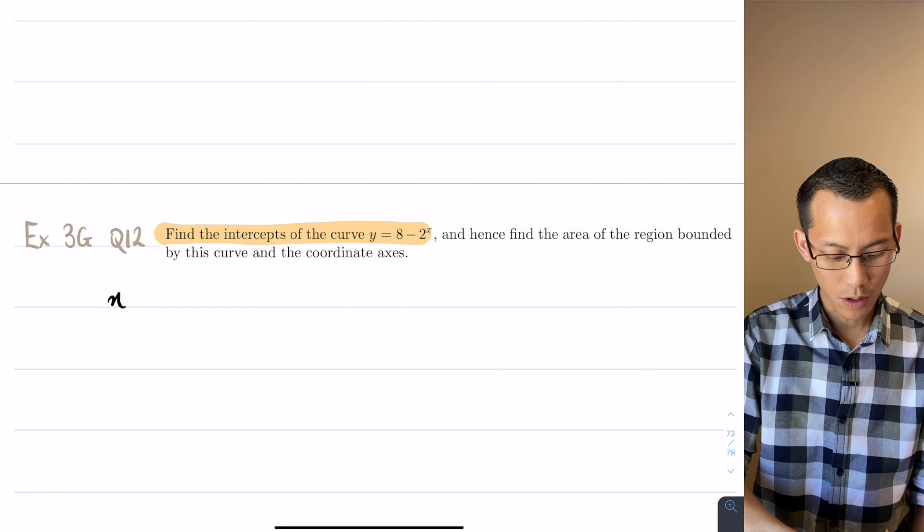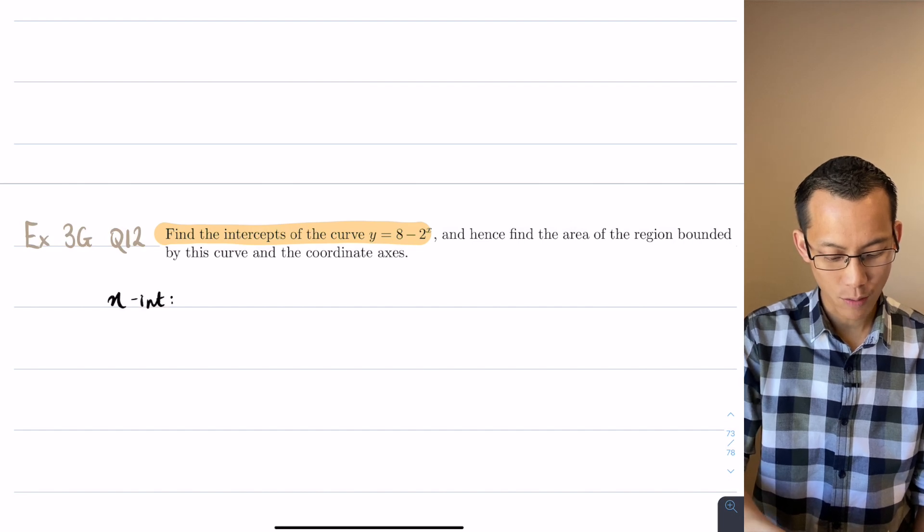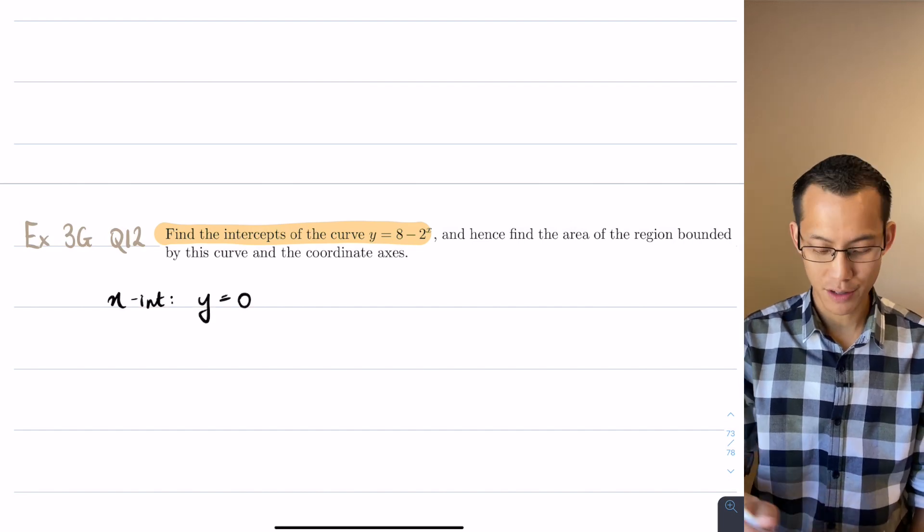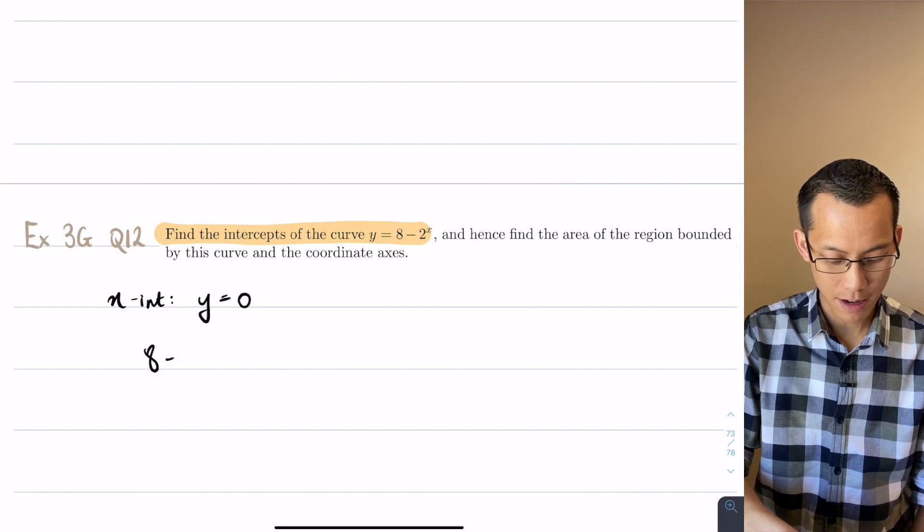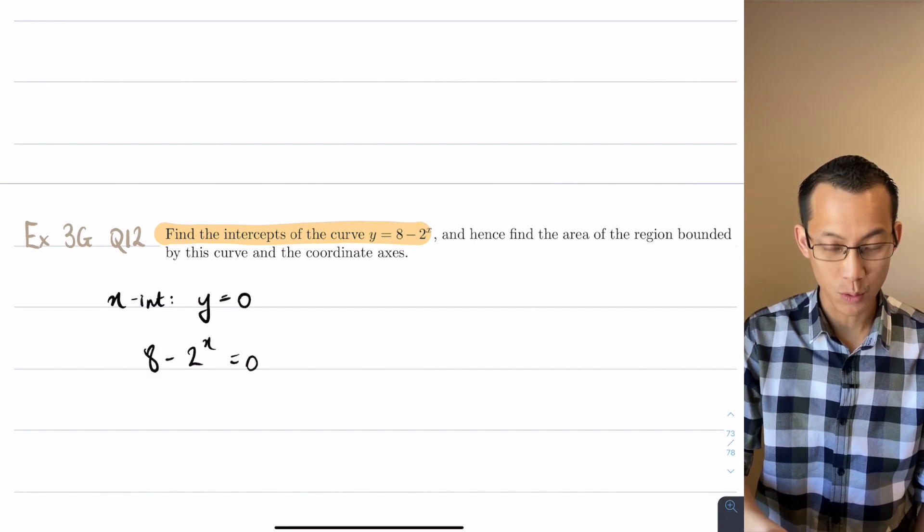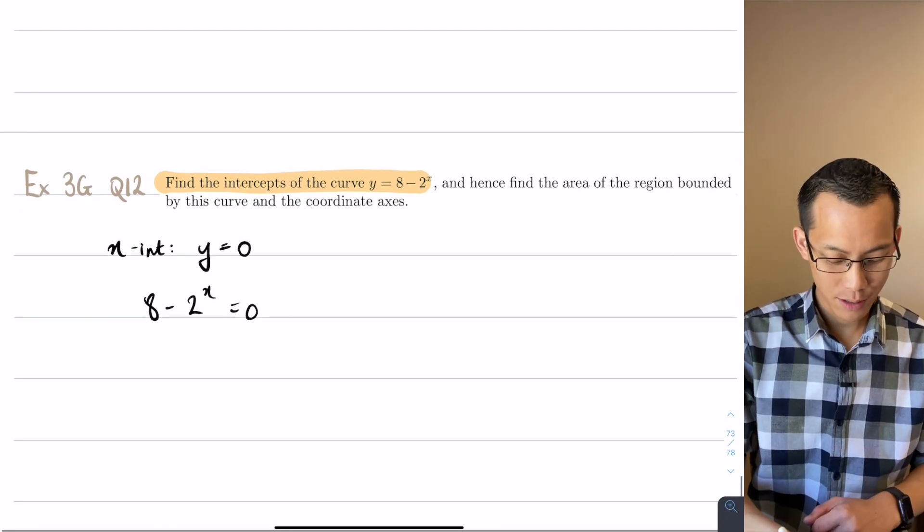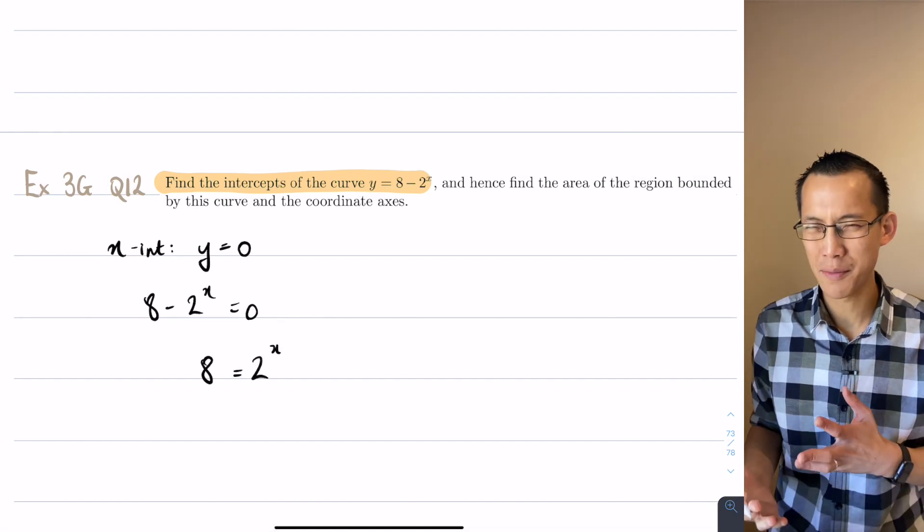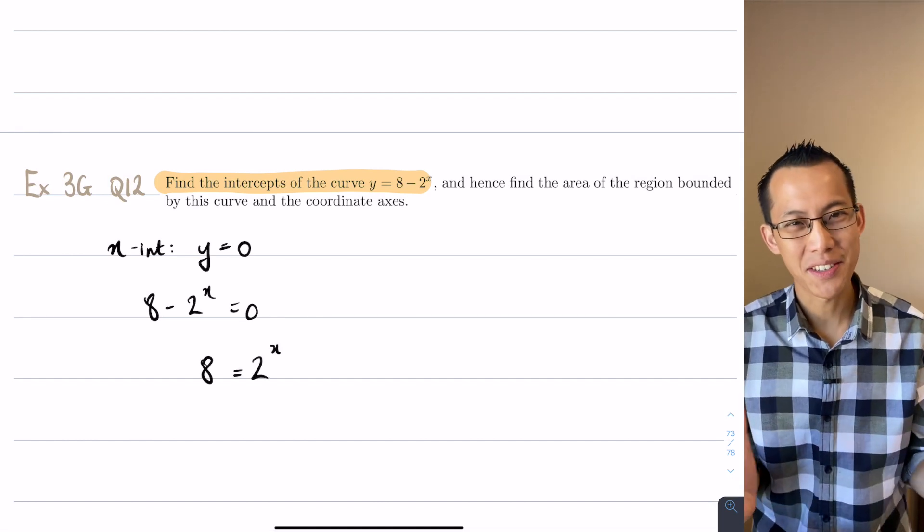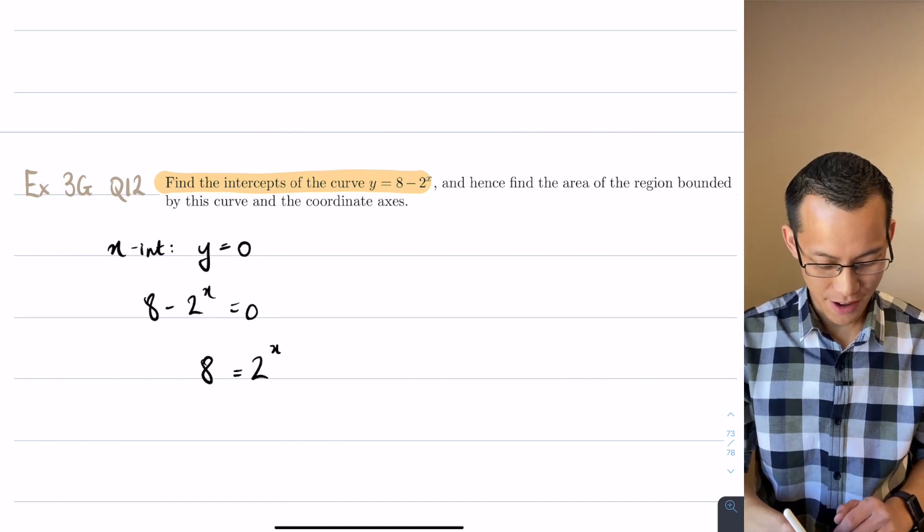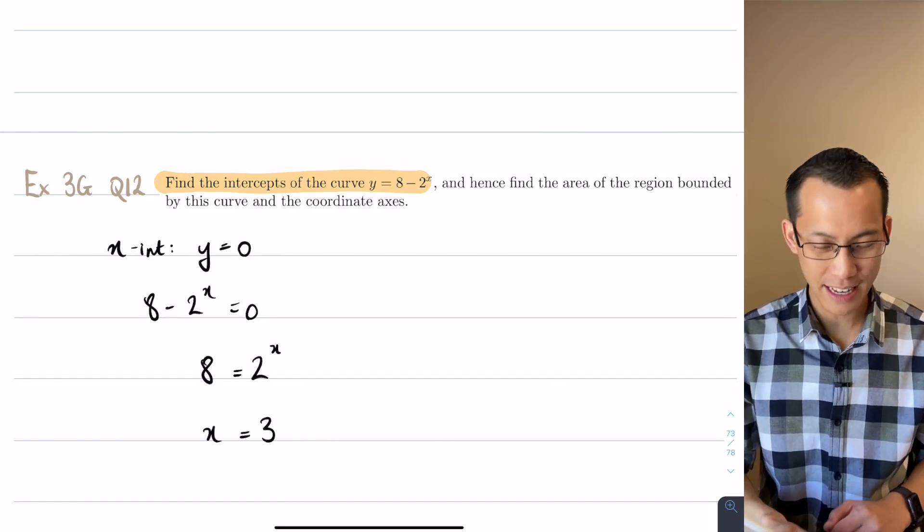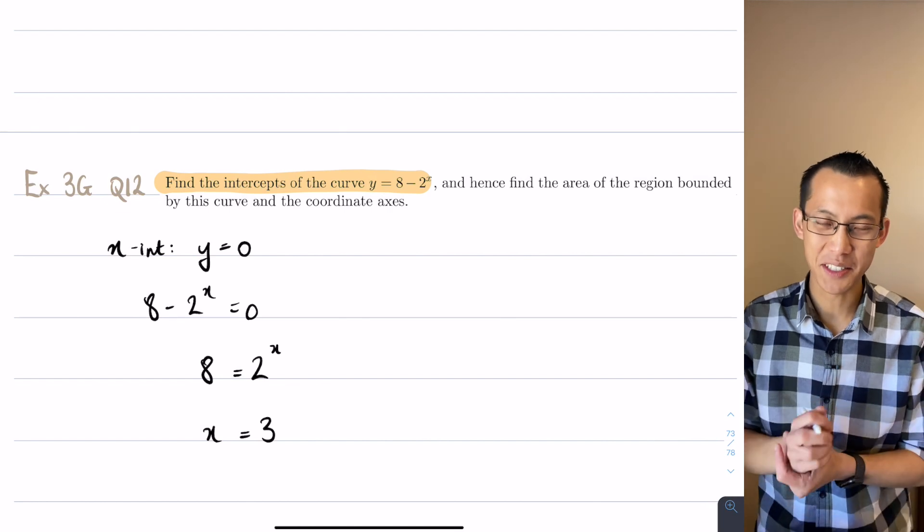To find x intercepts I'm going to let y equal 0. So in this case that means 8 minus 2 to the x equals 0. I can add 2 to the x to both sides. So 2 to the power of something equals 8. This is actually a nice whole number value so hopefully you're seeing along with me that that's x equals 3. 2 cubed does give you 8.